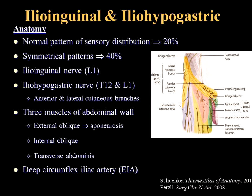The first blocks I'm going to talk about are the ilioinguinal and iliohypogastric nerves. Looking at anatomy published in some textbooks, the normal pattern of sensory distribution is probably only accurate about 20% of the time in live patients. Only about 40% of patients are symmetrical with regards to innervation patterns. The ilioinguinal nerve comes off L1; the iliohypogastric nerve comes off T12 and L1. The iliohypogastric nerve has two branches: the anterior and lateral. The lateral branch goes to the lateral aspect of the hip; the anterior branch provides innervation above the inguinal ligament.